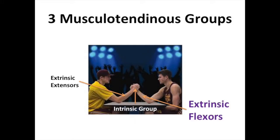Recall the three basic divisions of the musculotendinous group. First, the Intrinsic Division — the origins and insertions of the muscles lie within the hand itself. We will do a brief review momentarily. The next division is the Extrinsic Extensors, whose muscles are located on the dorsal aspect of the forearm. Finally, you have the Extrinsic Flexors, which we will discuss. These muscles are located on the volar aspect of the forearm.